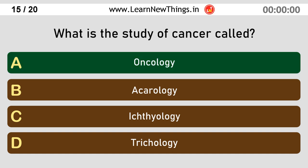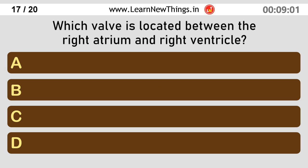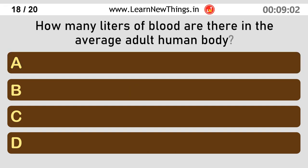Oncology. Which sea creature produces pearls? Oyster. Which valve is located between the right atrium and right ventricle? Tricuspid valve.